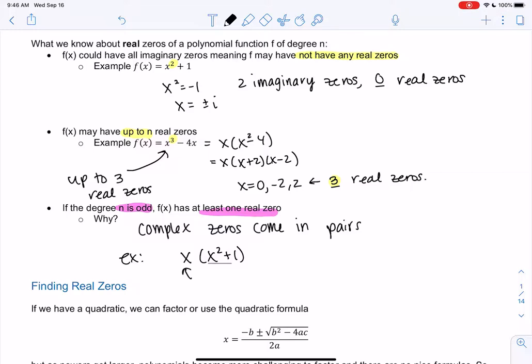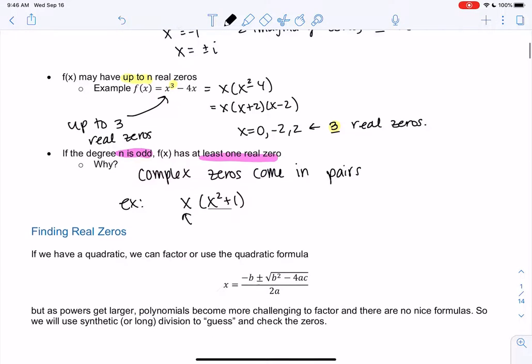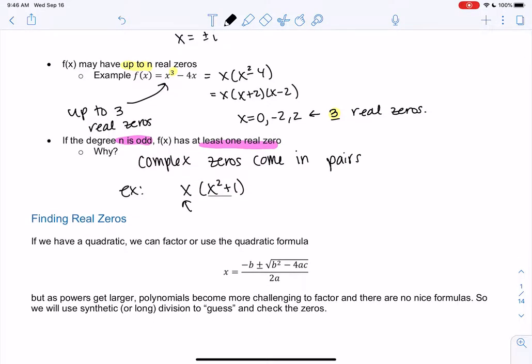So let's go over different processes for finding these real zeros. Obviously, we still have the quadratic formula, so I just copied that over in case we need a refresher. Anytime we have a quadratic, we can use the quadratic formula, right? This only works for ax squared plus bx plus c equals zero. In this chapter, we're going to see a lot of polynomials with higher powers. So we're going to have to figure out how to deal with x cubed, x to the fourth, and that's what we'll get into.